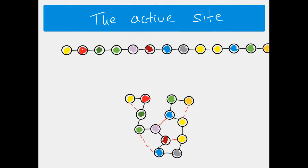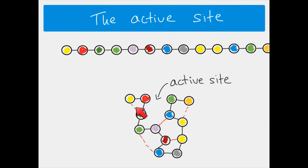There's a slight depression in the surface, and this is the active site — this is where the enzyme binds. The shape of this active site will be different in each different type of enzyme, as a result of the way the rest of the enzyme is folded. If the bonding between other amino acids in the enzyme is effective, that will affect the 3D shape and therefore the active site shape.